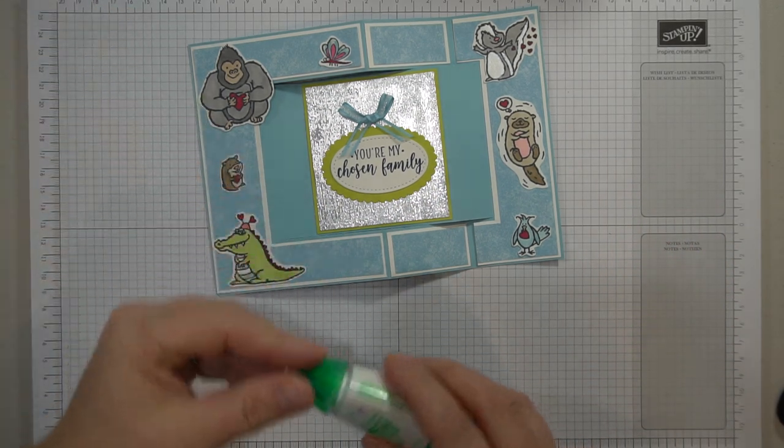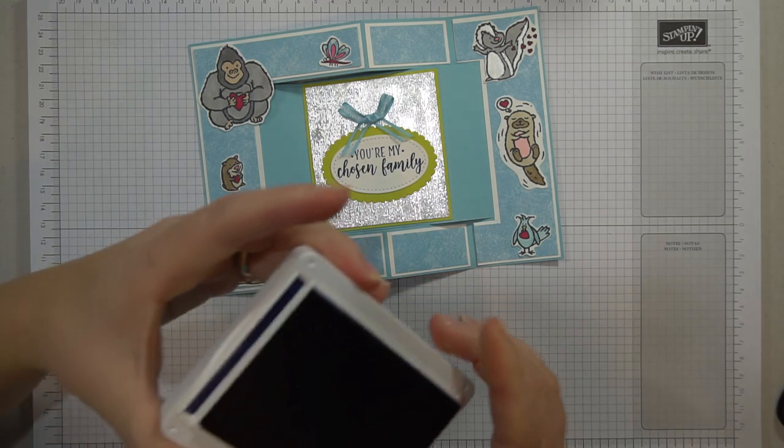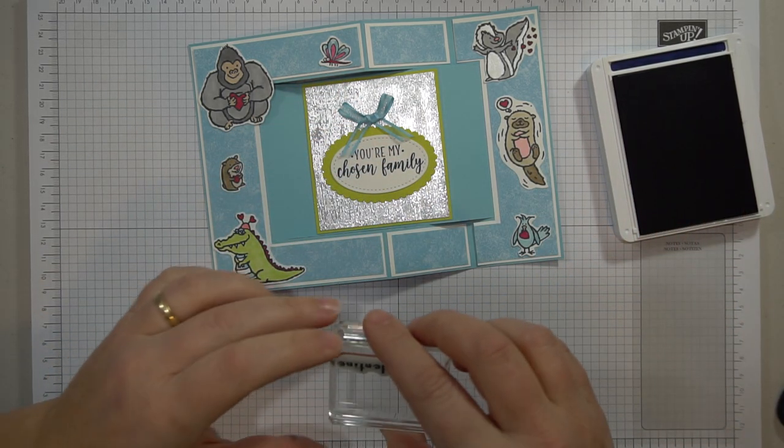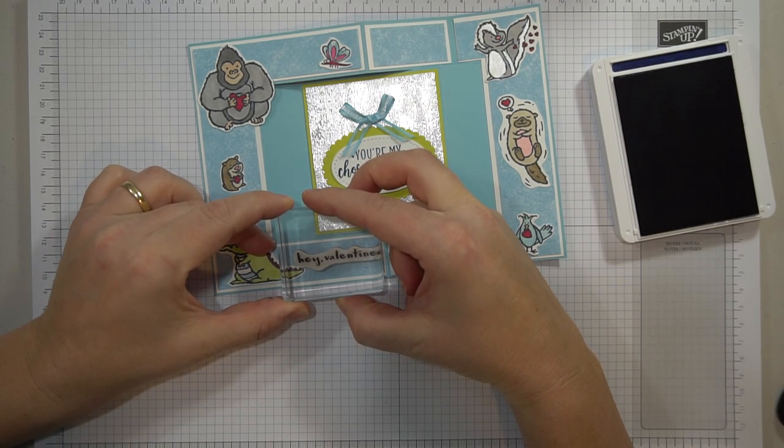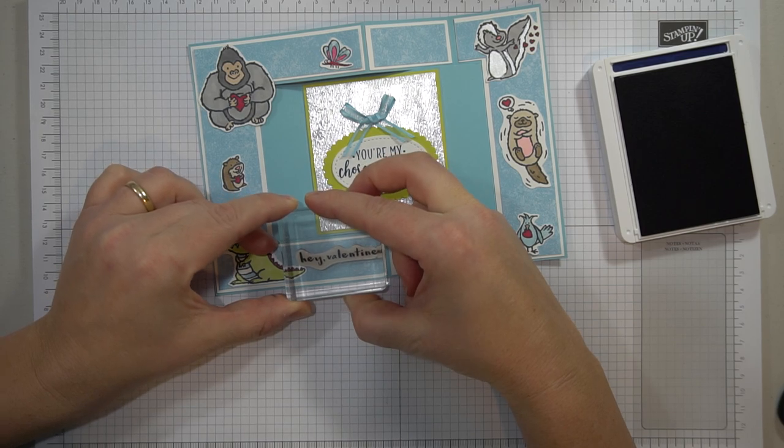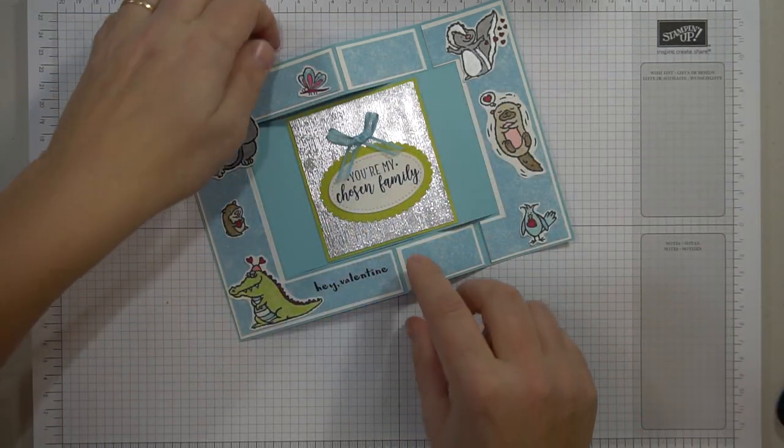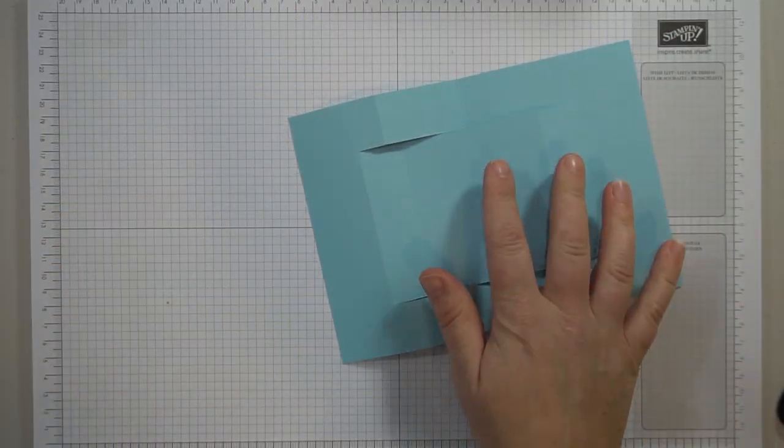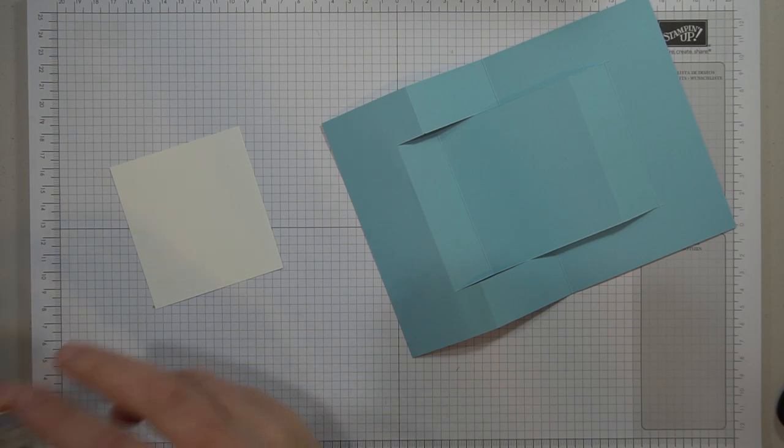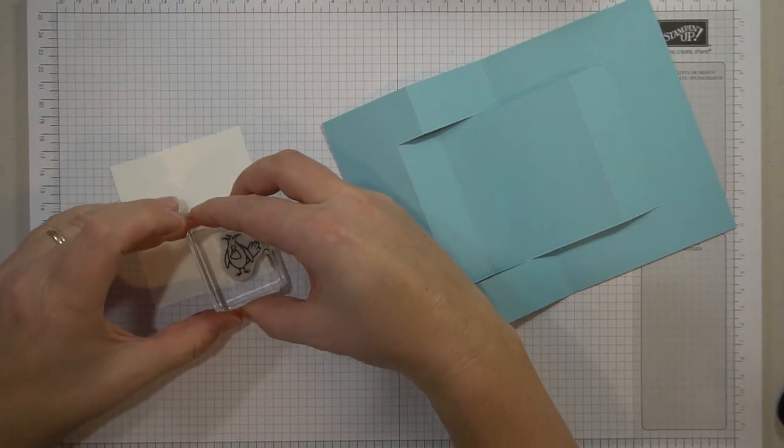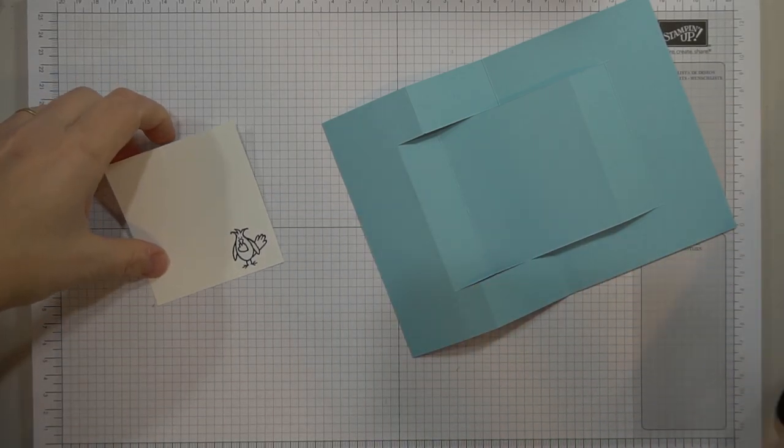And then the last thing I'm going to do is stamp the Valentine greeting. I'm going to bring in my Night of Navy. I hope you found this tutorial helpful and thought maybe you could try one of these cards if you've never have a Z fold. It's not as complicated as I feared. Once you kind of create a pattern, it's not that bad. So I'm using Night of Navy here to stamp Hey Valentine. And I think that's a nice little touch at the end. Now, the last thing I want to do is show you how you can still write on here. So I'm going to bring in this little piece of cardstock here and I will stamp it with the little birdie. I think this one's a nice one to just put it in the corner. So he looks adorable. And put this on.